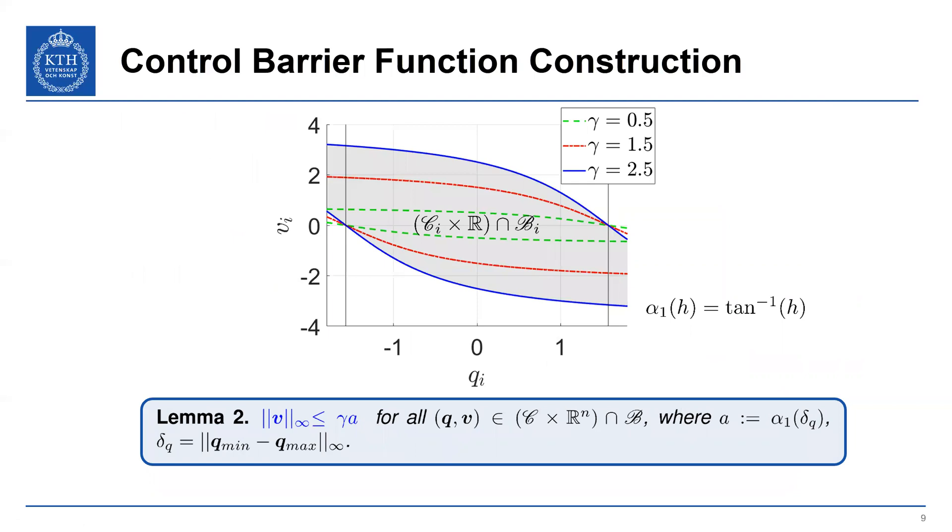So first off, if you look back to this set that I introduced before, we want to see how does gamma affect this system. And in fact, as you increase gamma, you're actually increasing the amount of velocity that you can have in the system. And this holds for this class of extended class K function, where it's the arc tangent of H, but this applies to any extended class K function, linear, cubic, what have you.